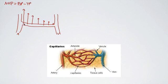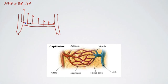As water leaves the capillaries, you get less and less water inside, which causes a change in osmotic pressure. Osmosis is the movement of water across a selectively permeable membrane, and we have one here. So as water leaves, there's osmotic pressure pulling water back in. As more water leaves, the osmotic pressure increases further. So as the net hydrostatic pressure goes down, the net osmotic pressure increases and increases.